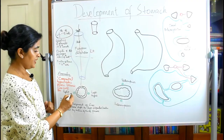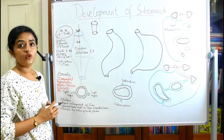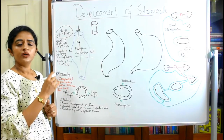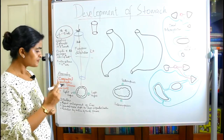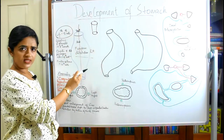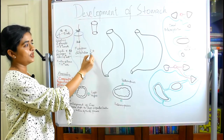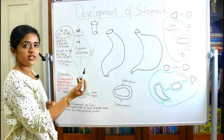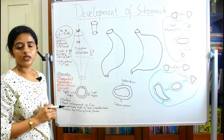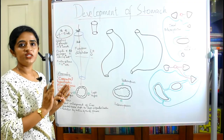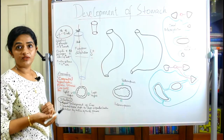One important point to note is that on either side of the developing stomach there are vagus nerves — a right vagus nerve on the right side and a left vagus nerve on the left side. In the initial period, when the tube lies in the midline, the right vagus lies on the right side of the stomach and the left vagus lies on the left side.